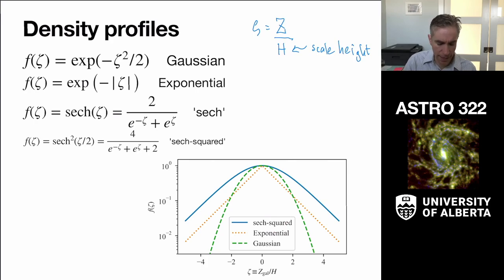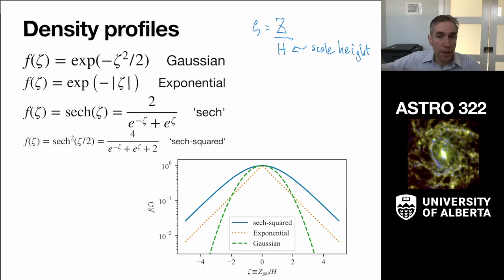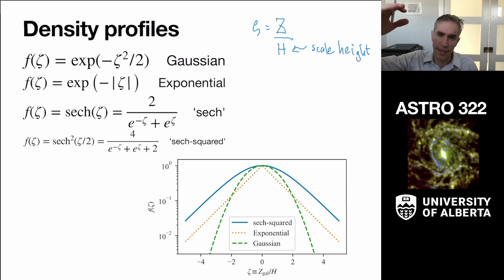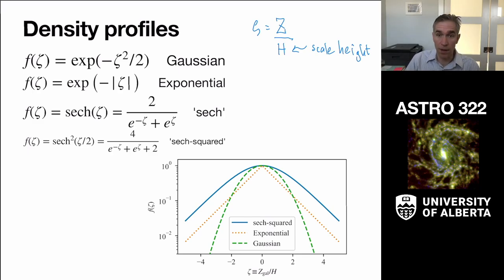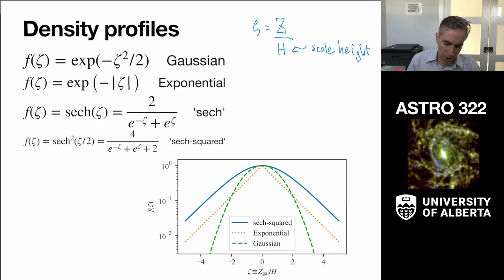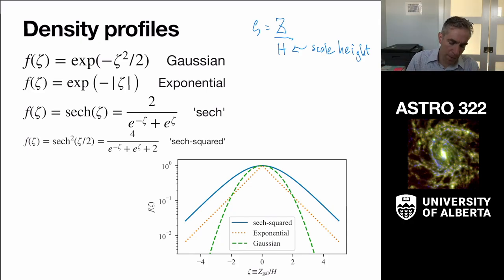The functional forms we use include a Gaussian or exponential — e to the minus zeta squared over two, or e to the minus absolute value of zeta. We also use physically motivated forms: sech or sech squared, the hyperbolic secant. Sech is one over the hyperbolic cosine. Its functional form is two over e to the minus zeta plus e to the plus zeta.